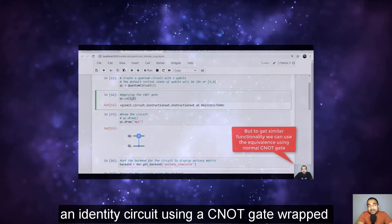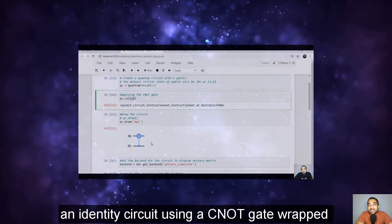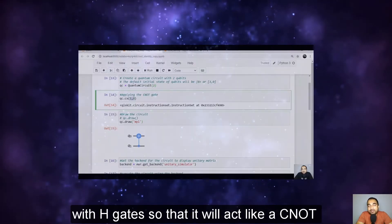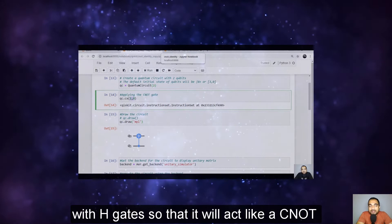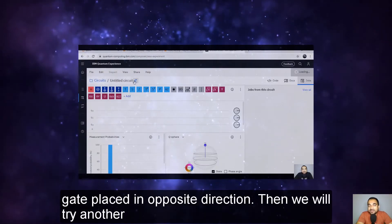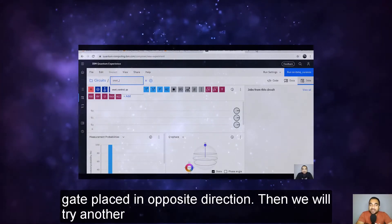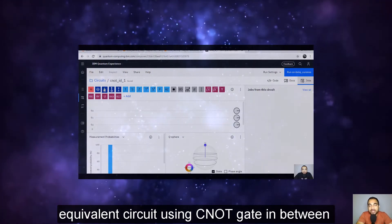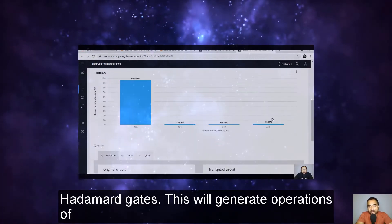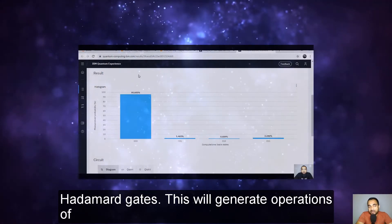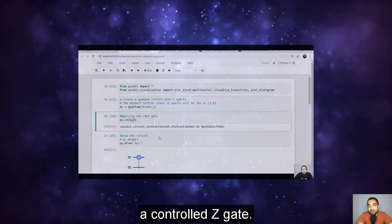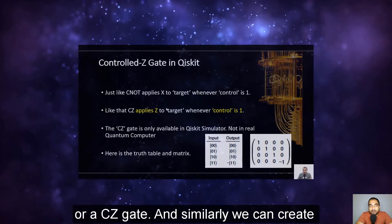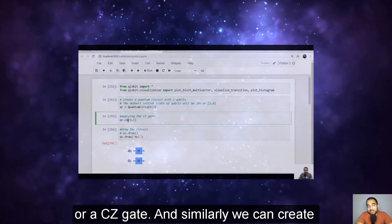At first we will create an identity circuit using a CNOT gate wrapped with H gates so that it will act like a CNOT gate placed in opposite direction. Then we will try another equivalent circuit using CNOT gate in between Hadamard gates. This will generate operations of a controlled C gate or a controlled Z gate or a CZ gate.